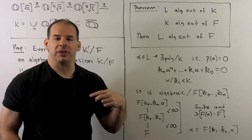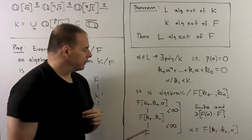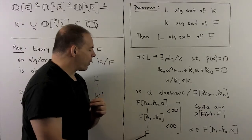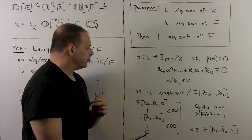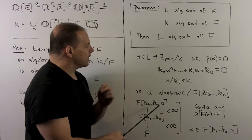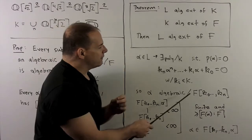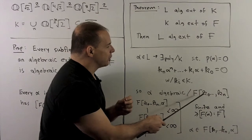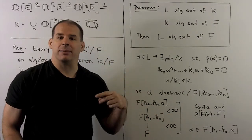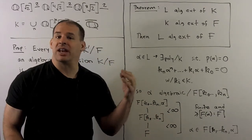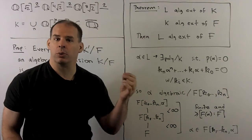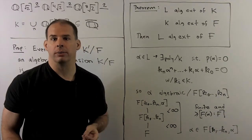We also have, because k is algebraic over f, that f adjoin k_0 through k_n is finite over f. So putting these together, this is going to be a finite extension over f. We note alpha is an element of f adjoin k_0 through k_n adjoin alpha, so that means alpha is an algebraic element with respect to f, which is what we wanted to show.